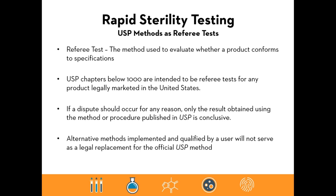An important point: USP test methods are considered the referee tests — the method used to evaluate whether a product conforms to the specification of sterility. USP chapters below 1000, including chapter 71, are intended to be referee tests for any product legally marketed in the United States. If a dispute should occur, results obtained using a USP compendial method are considered the conclusive result. Alternative methods, even if validation and method suitability have been conducted, will not serve as a legal replacement for the official USP test method.